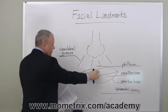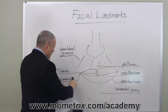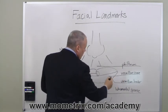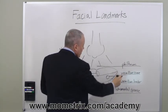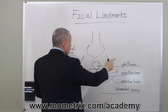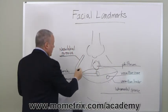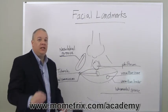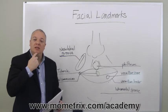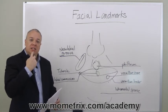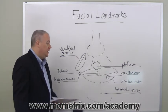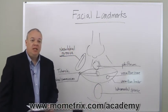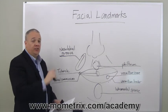So to recap: you've got the protrusion — the tubercle — the labial commissures at the corners, the outer edge of the lips called the vermilion border, the lips themselves called the vermilion zone, the area underneath the nose called the philtrum, and the groove called the nasolabial groove. Then we want to identify one last landmark: underneath the lips and before you get to the chin, this little indentation is called the labial mental groove. So these are the major facial landmarks.